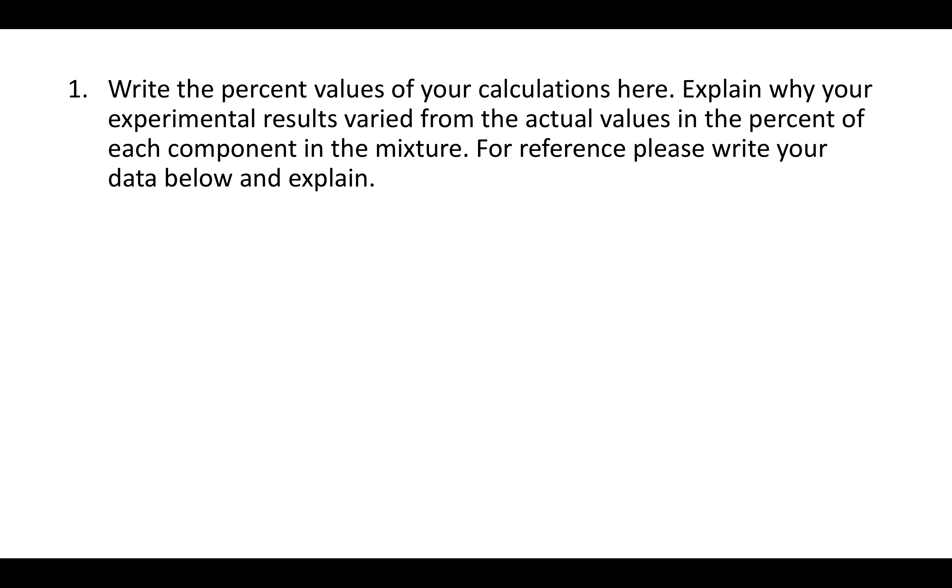To explain why your experimental results varied from the actual values, there are two ways that could have happened. Either you added something that you didn't want, some sort of contaminant, or you lost something that you did want.